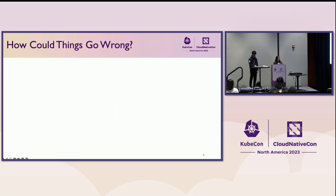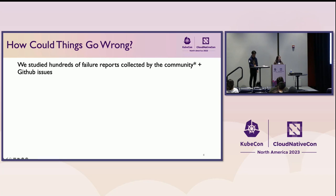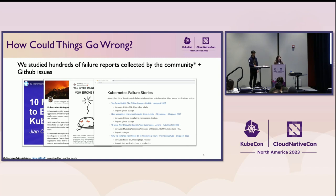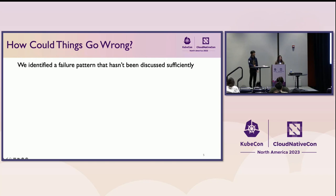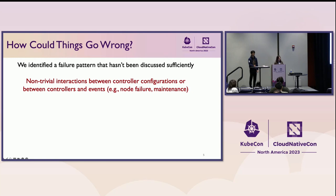So how could things go wrong? We studied hundreds of different failure reports collected by the community and GitHub issues. In general, there are many different categories for failures, like DNS issues, Linux kernel, configuration syntax problems, credential issues. However, we identified a failure pattern that hasn't been well discussed before, which is caused by non-trivial interactions between controller configurations or between controllers and events — including environmental events like node failures or operational events like maintenance.